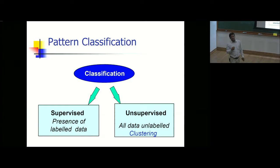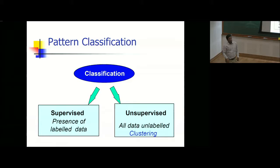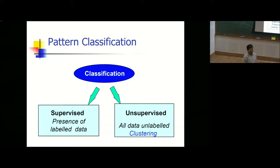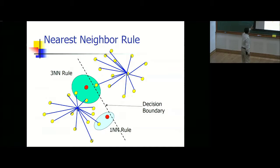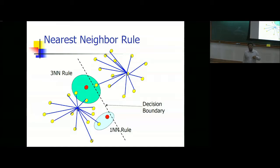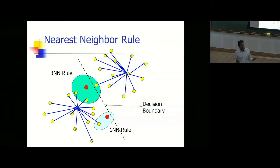For unsupervised learning, out of 100 you do not know anything. Unsupervised learning is also called clustering. In the supervised domain, you have 15 Indians and 20 Germans. You find a new person, plot their measurements, and determine which class they belong to.